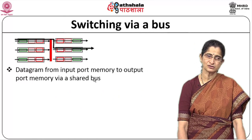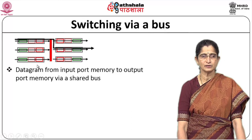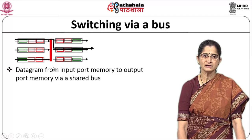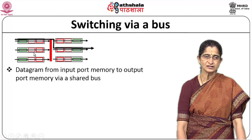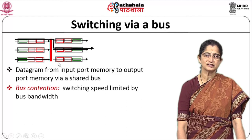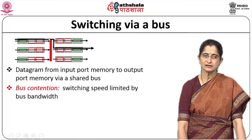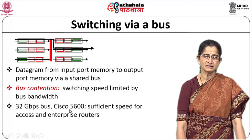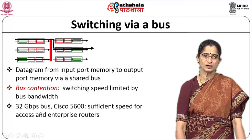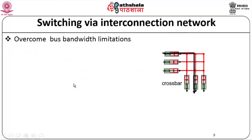In between, we had switching via bus, where the datagram from an input port memory is shifted to an output port memory via a shared bus. Instead of centralized memory, there is memory that is part of the input ports and memory that is part of the output ports, and datagrams are switched through a shared bus. There is significant bus contention because switching speed is limited by the bus bandwidth. Earlier Cisco 5600 series routers worked with about a 32 Gbps bus, which was sufficient at that time for access and enterprise routers, but now faster interconnection networks are used.